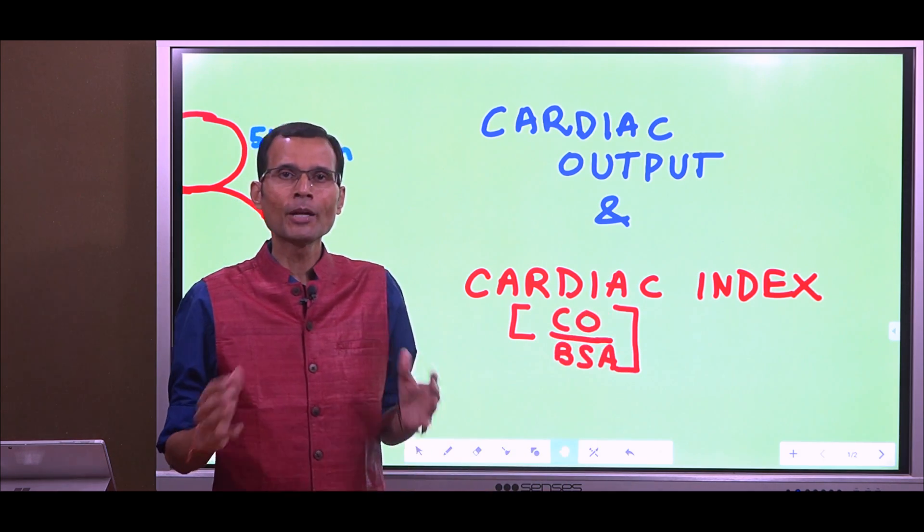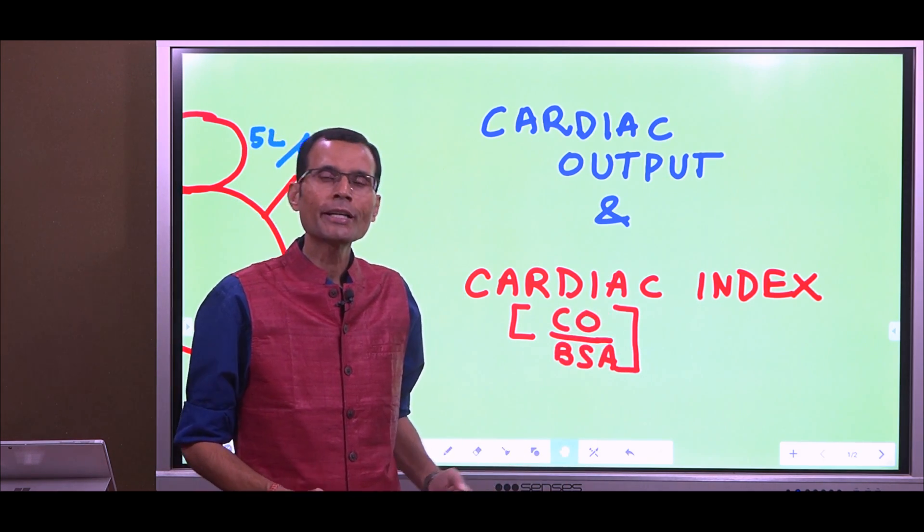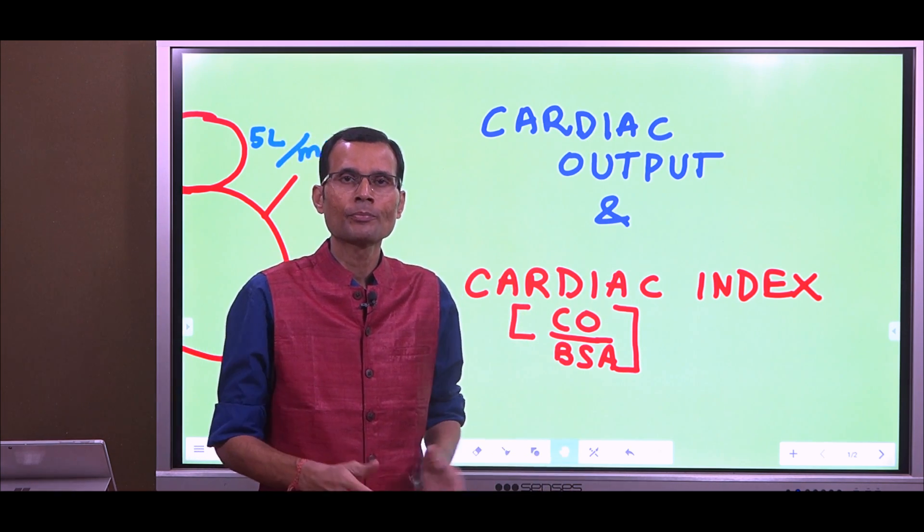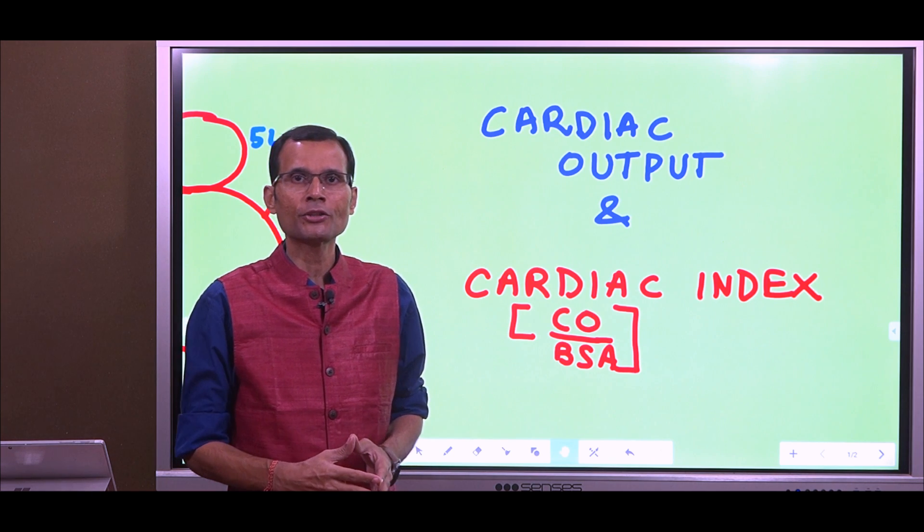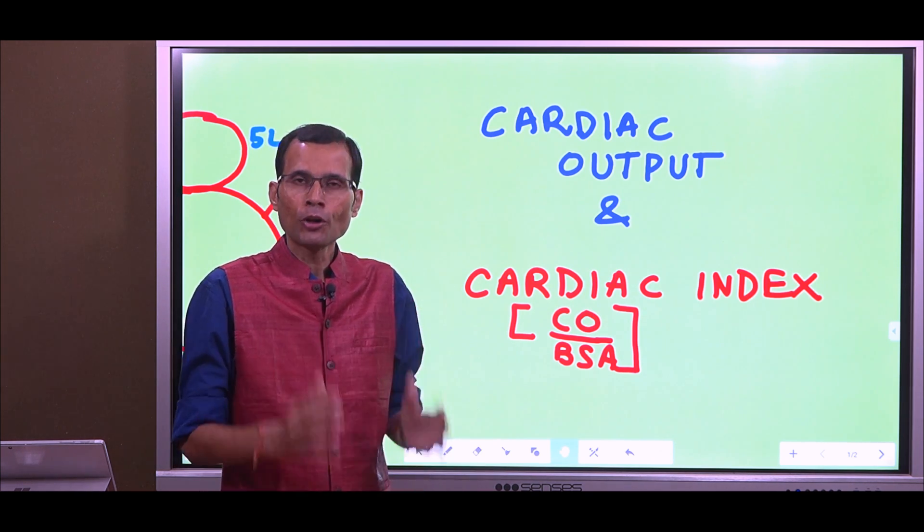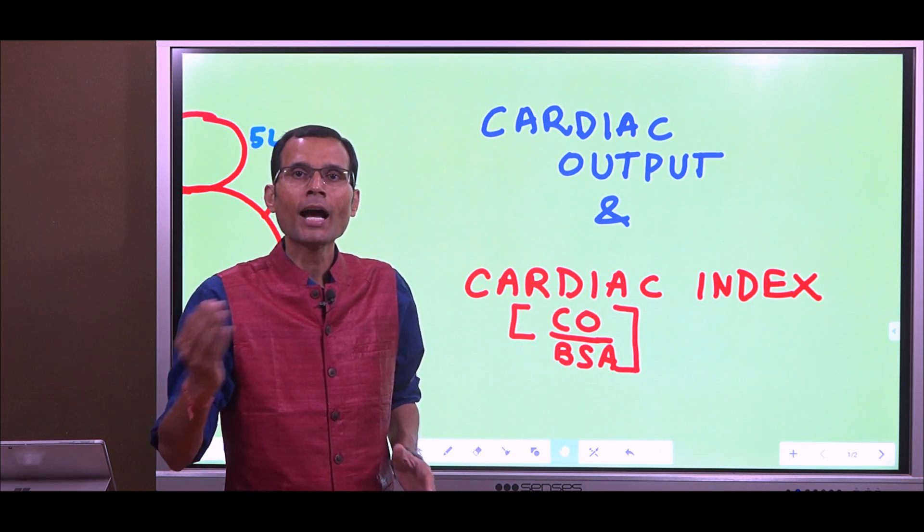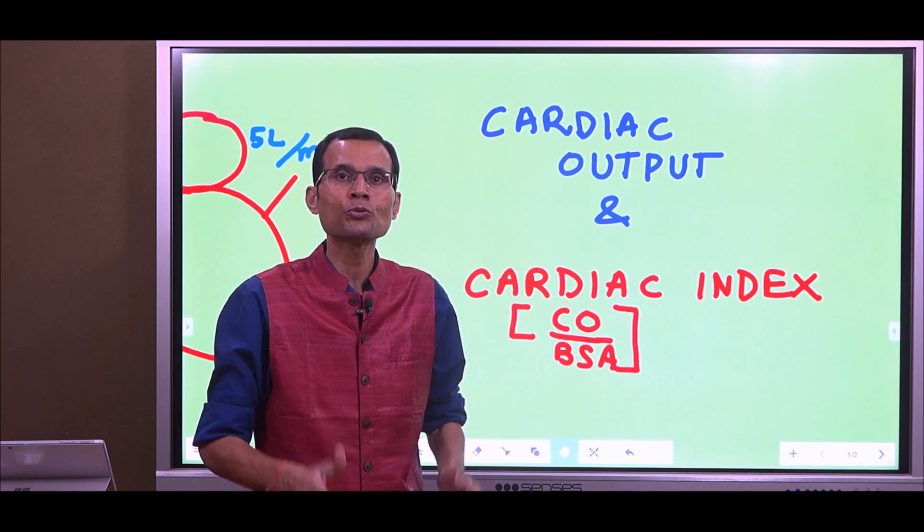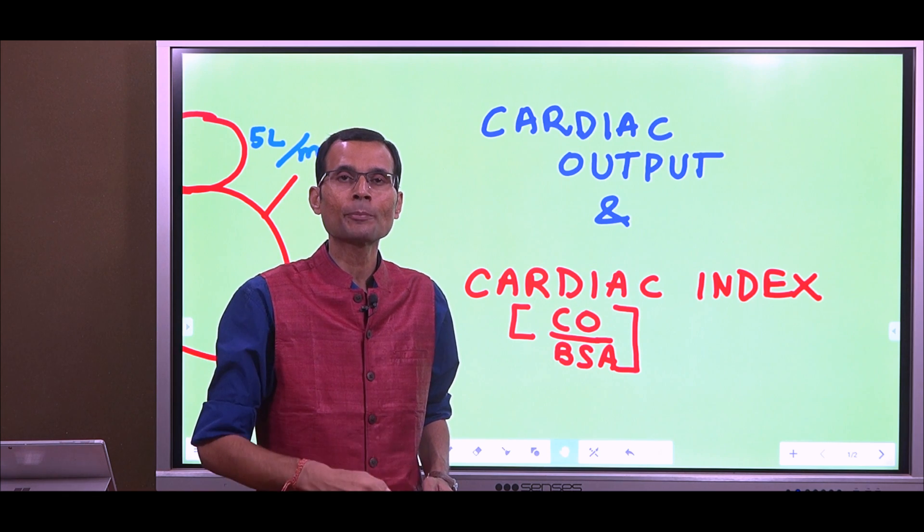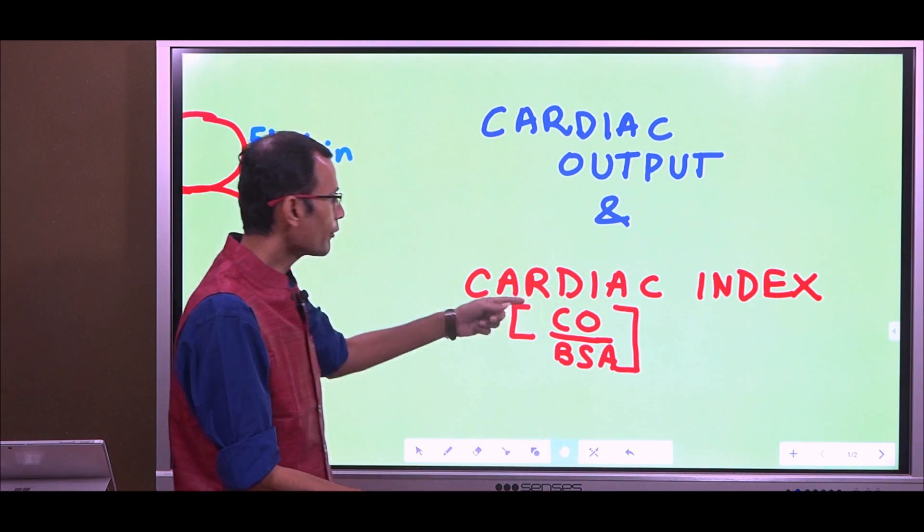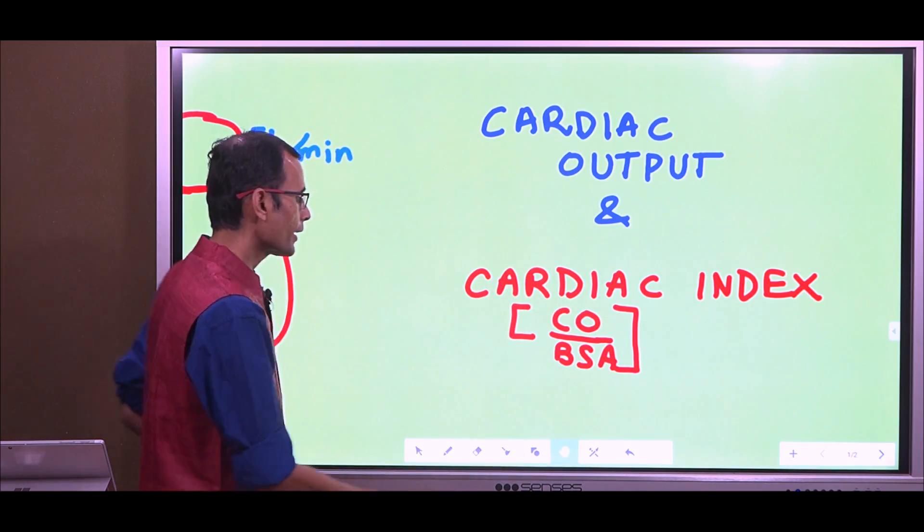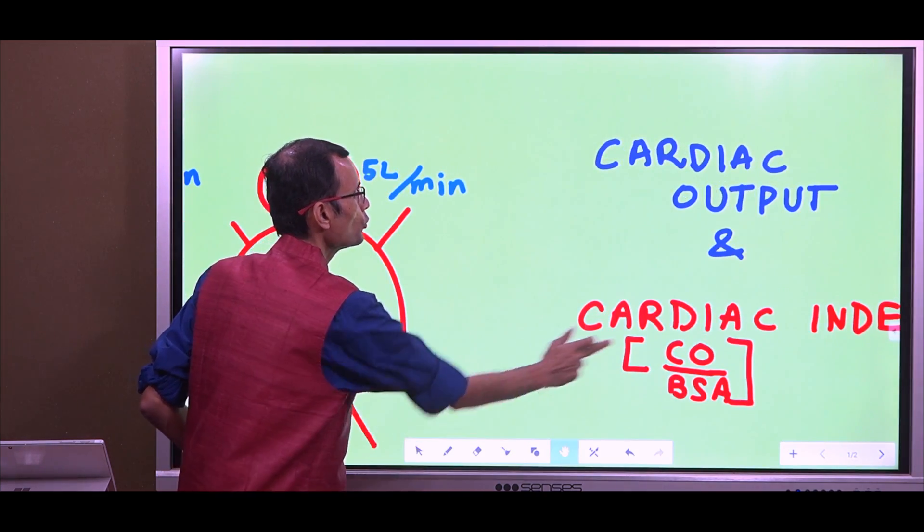Now, what is the need to know this? We are already aware that 5 liters of blood is being pumped out. But for what? It is to supply oxygen to the body tissues. So, we want to know this cardiac output is for how much tissue mass. It is going to supply oxygen to how much tissue mass. And therefore, we divide cardiac output by body surface area. It really means the tissue mass.